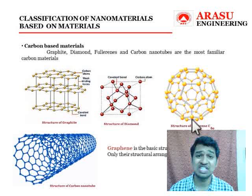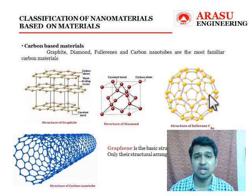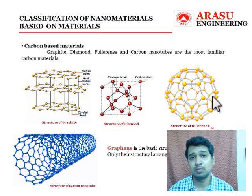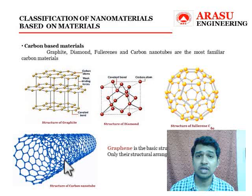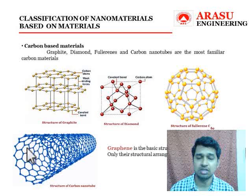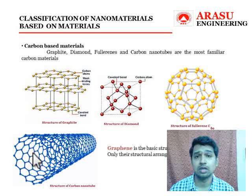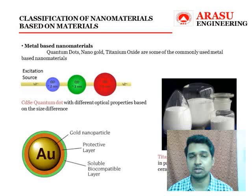Fullerenes, or C60, consist of 60 carbon atoms forming a football-like shape. They are used to carry drugs in their core, and their surface can be modified to make them more biocompatible for the human body. Carbon nanotubes are formed by rolling a graphene sheet into a hollow cylinder, which may have closed or open ends. We have a few more slides to discuss carbon nanotubes in detail in the upcoming session.